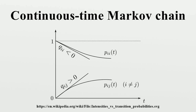Transition probability definition. For any value n = 0, 1, 2, 3 and times indexed up to this value of n — T0, T1, T2 — and all states recorded at these times i0, i1, i2, i3, it holds that P_ij is the solution of the forward equation with initial condition P as the identity matrix.